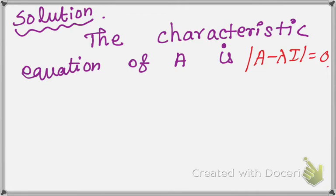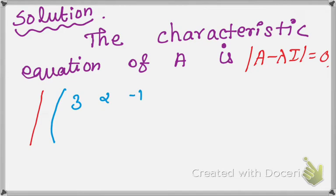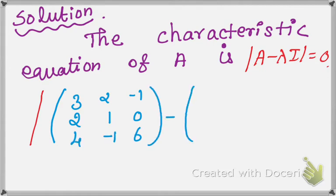So, the determinant of (A - λI) = 0. The given matrix A is [3, 2, -1; 2, 1, 0; 4, -1, 6], minus lambda times the identity matrix I.